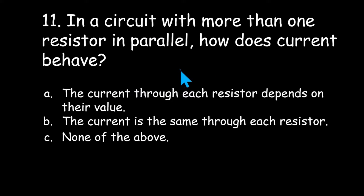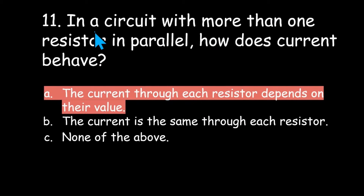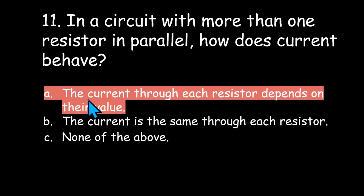Number eleven: in a circuit with more than one resistor in parallel, how does current behave? The current through each resistor depends on their value, the current is the same through each resistor, or none of the above? In a parallel circuit, the current through each resistor depends on their value — the lower value resistor gets more current, the higher value resistor gets the least current. But the current going into the circuit is the same coming out.